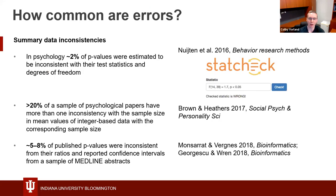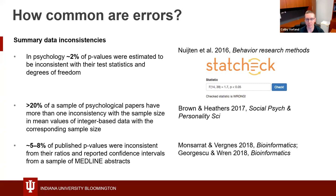So first, we start by asking: is this even a problem? How common are errors in science? There are too many types of errors to go over in this talk, so I'm just going to run through some examples of the range of different error types in scientific articles you might encounter. The first type are errors that can be detected just by looking at summary data reported in papers.